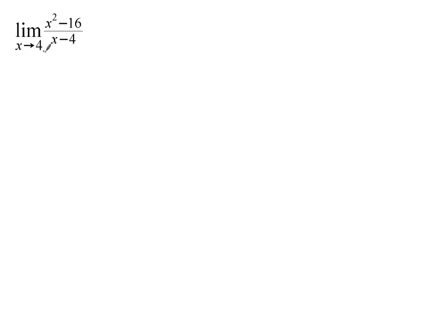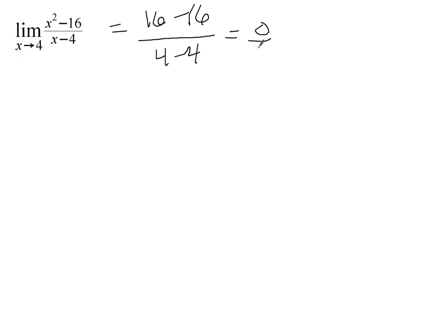On this one, we'll plug in 4 and we end up getting 16 minus 16 over 4 minus 4, which is 0 over 0. This is an indeterminate form.